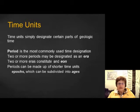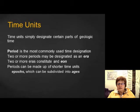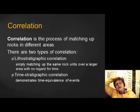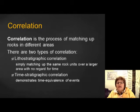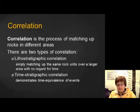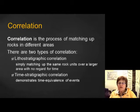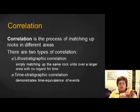This takes us to correlation. Correlation is the process of matching up rocks from different areas — you could start in the eastern United States and go all the way to the Grand Canyon. We use different tools: rocks and fossils. We do lithostratigraphic correlation, which is simply matching up rocks, and we can also do time stratigraphic correlation, which correlates based on time equivalence of events.